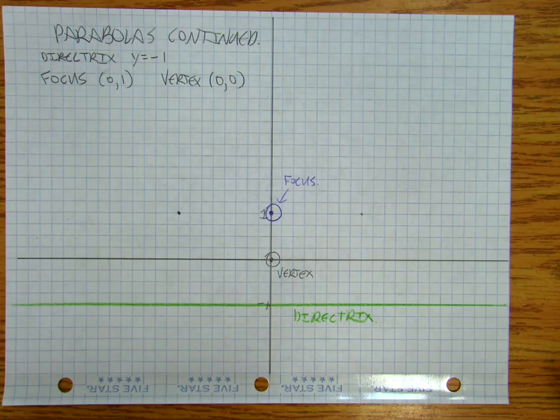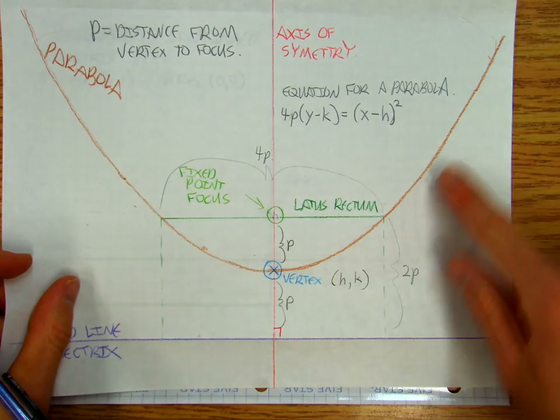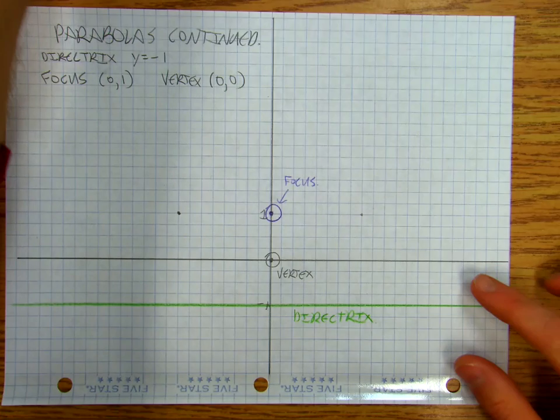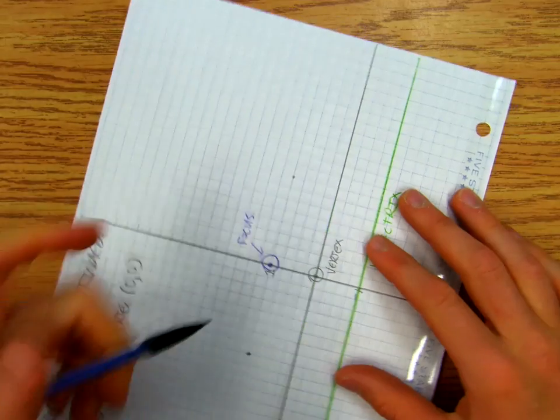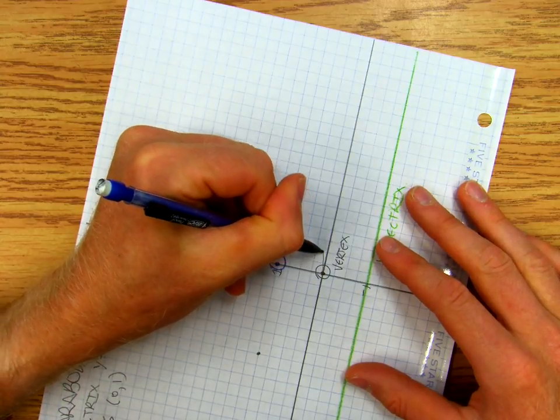Now freehanding parabolas is pretty difficult. I kind of want this overall shape like that. So I want to start off horizontal, and then I want to go up, and I think it helps me to do it this way.